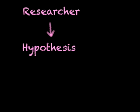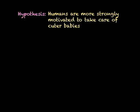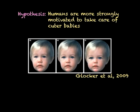When a researcher comes up with a hypothesis, he or she can test that hypothesis via an experiment. For example, in psychology, a researcher might hypothesize that humans are more strongly motivated to take care of cuter babies. This was a real hypothesis explored by Glocker et al. in 2009, and we're going to use that as a jumping-off point to exploring independent and dependent variables.